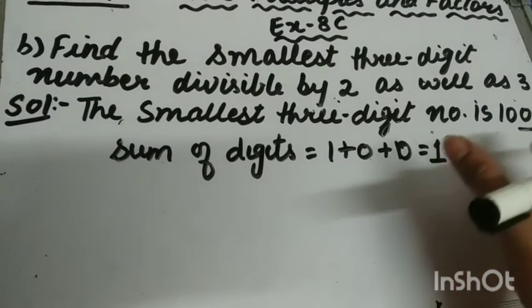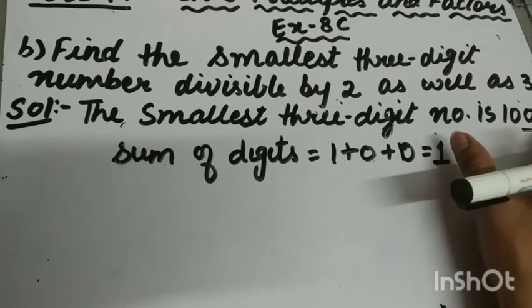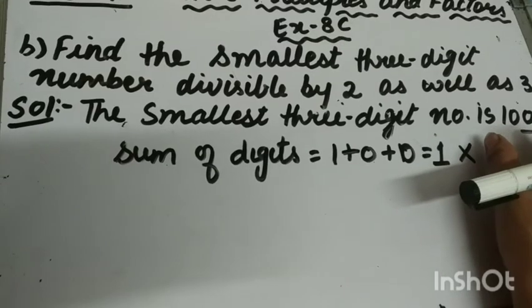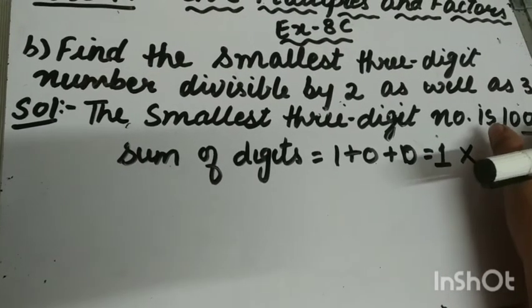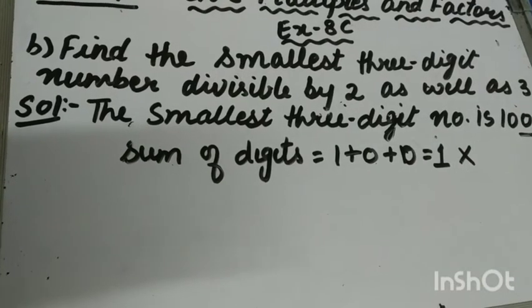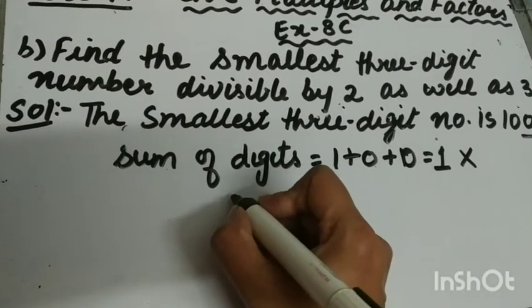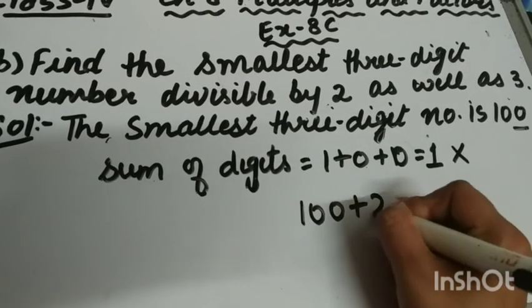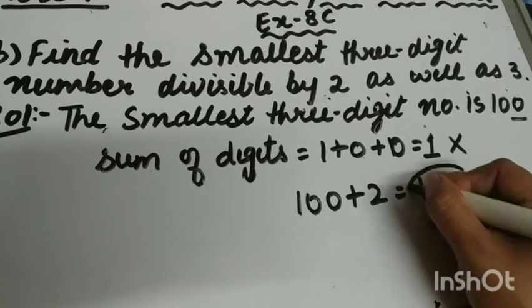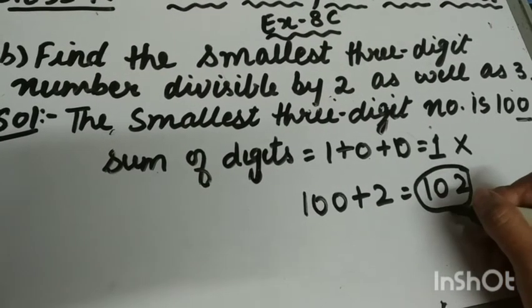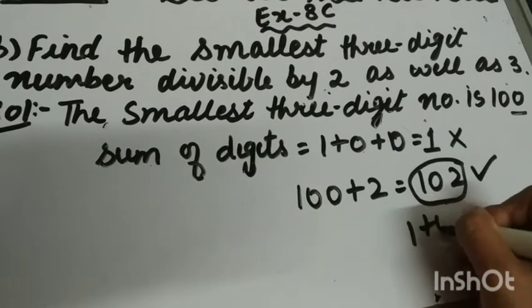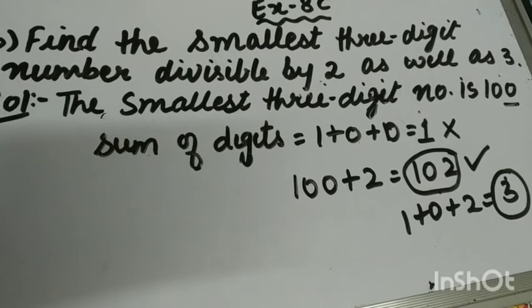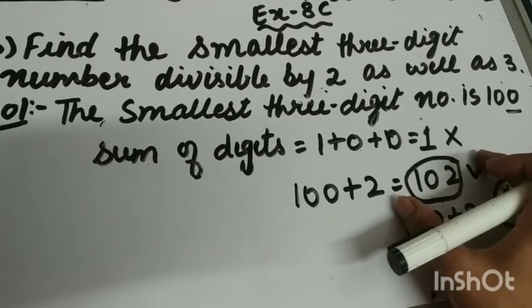We want the smallest 3-digit number divisible by both 2 and 3. So which smallest even number should we add to 100 to make it divisible by 3? If we add 2 to 100, we get 102. It is an even number, so it is divisible by 2, and the sum of digits is 3, which is divisible by 3. So 102 is divisible by both 2 and 3.